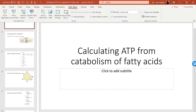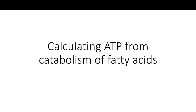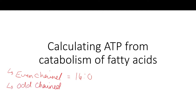In this video I'm going to walk you through how to do the calculations of determining how much ATP can be generated by beta oxidation and the citric acid cycle from fatty acid metabolism. We're going to look at even-chain fats first using 16:0 palmitate, then odd-chain fats using 17:0, and also unsaturated fats such as 16:1 fatty acid.